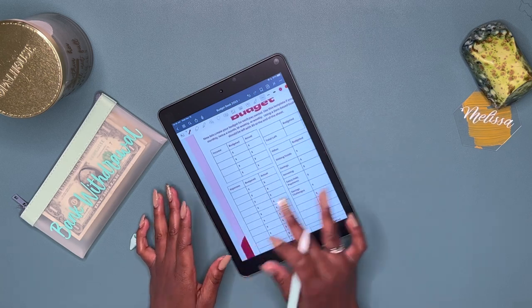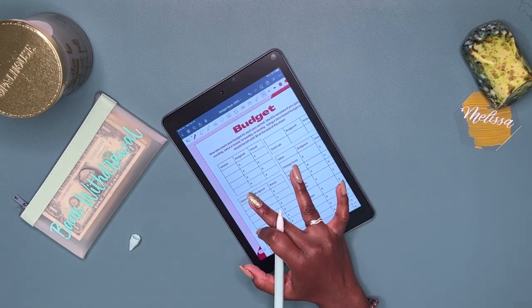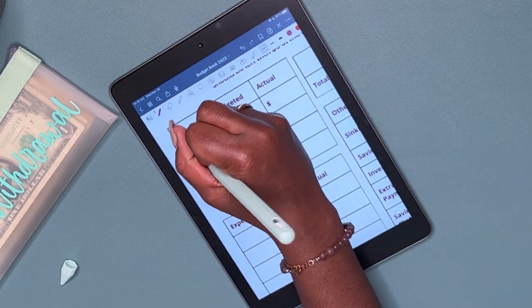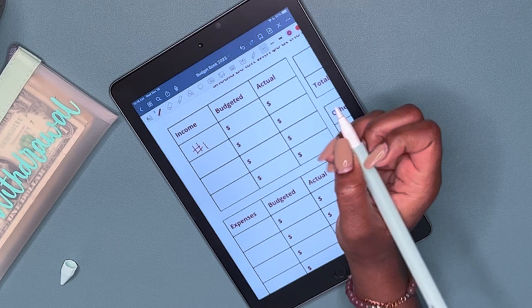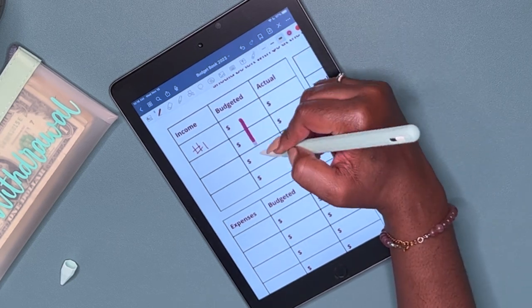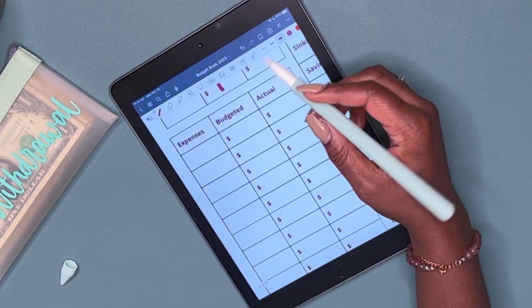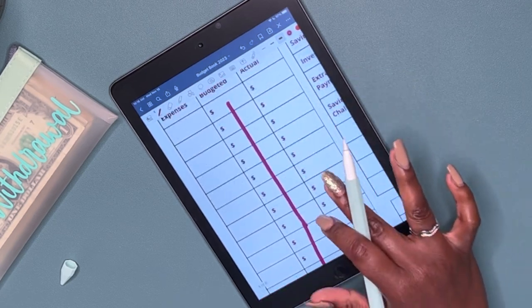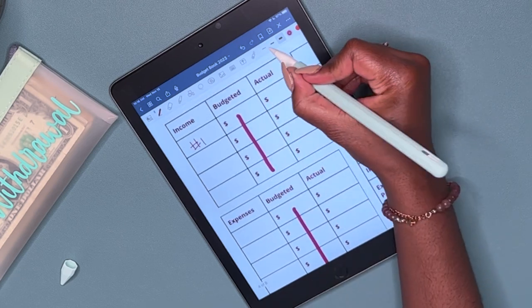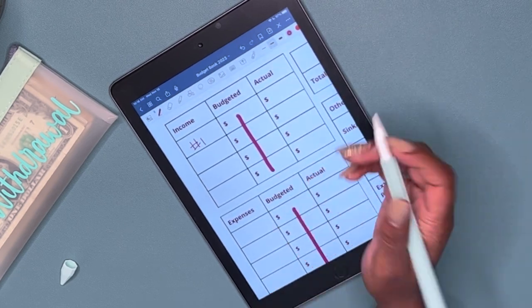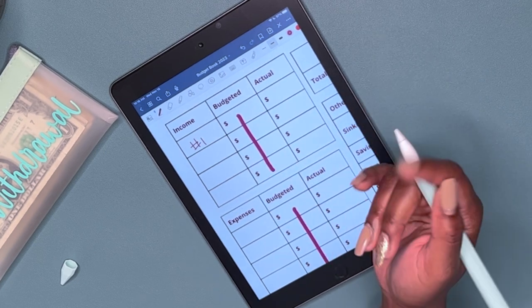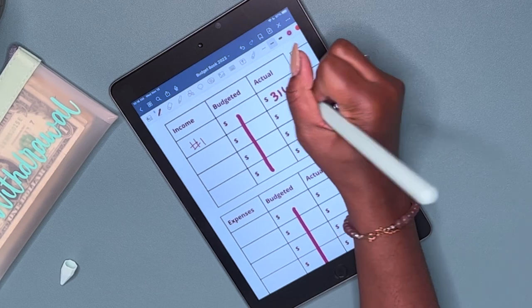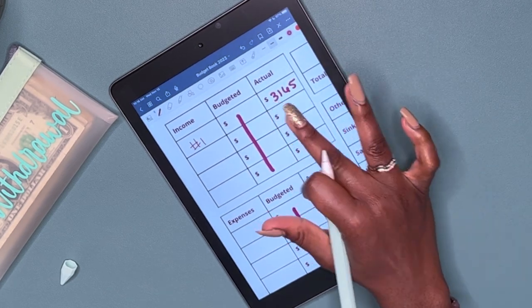So let's just go ahead and get started. So for my income, this is just going to be for my first job. I'm not going to focus on the budgeted aspect because I've already gotten paid. I'm just going to focus on the actual amounts. So for the first paycheck, the only income that I have right now will be $3,165. And that is the total.